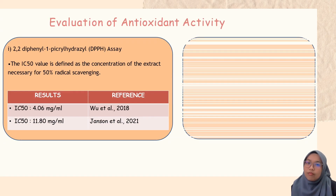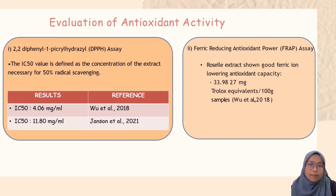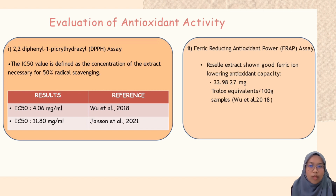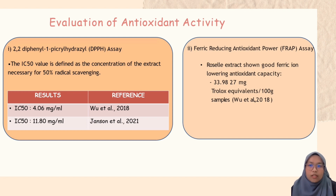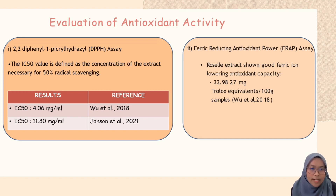Let's continue with the evaluation of antioxidant activity. The first is the DPPH assay. In this assay, there is an IC50 value, which is defined as the concentration of the extract necessary for 50% radical scavenging. Based on a study from Buth, the IC50 value was 4.06 mg per ml. Meanwhile, Jensen mentioned that the IC50 value of Roselle extract was 11.80 mg per ml. The second is ferric-reducing antioxidant power assay, or FRAP. Roselle extract showed good ferric iron-lowering antioxidant capacity, which was 33.9827 mg Trolox equivalent per 100 g sample.